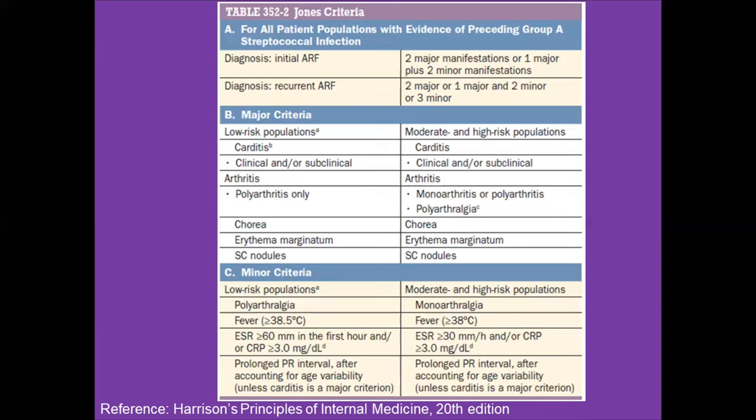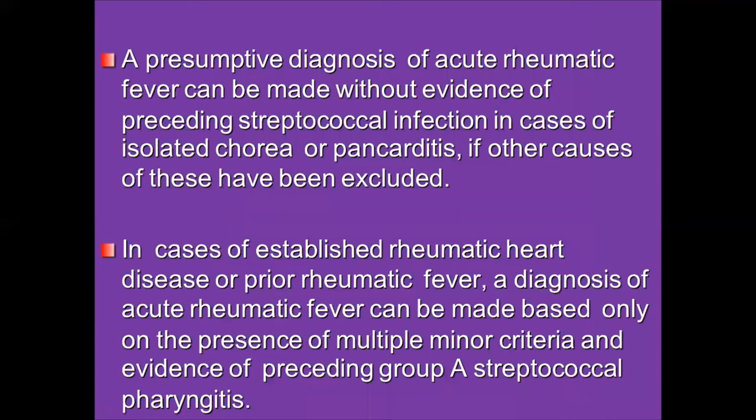If the patient fulfills the required Jones criteria, we can diagnose acute rheumatic fever. For a presumptive diagnosis, evidence of preceding streptococcal infection is not required in cases of isolated chorea or pancarditis when other causes have been excluded. In all other cases, evidence of streptococcal infection must also be present. In established rheumatic heart disease or prior rheumatic fever, diagnosis can be made based on multiple minor criteria and evidence of preceding group A streptococcal pharyngitis.